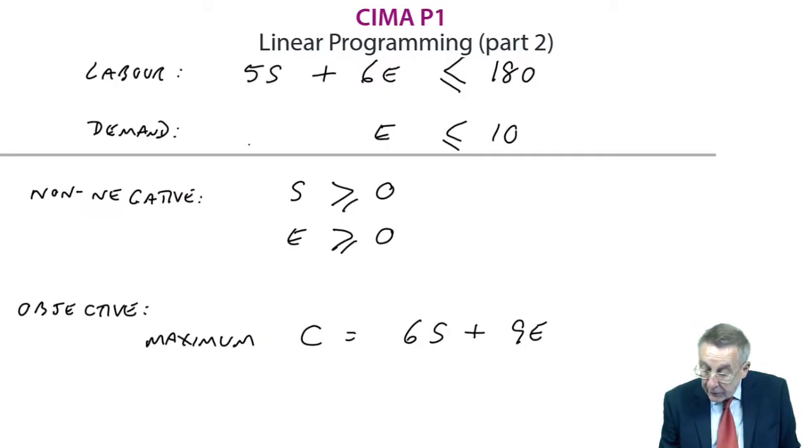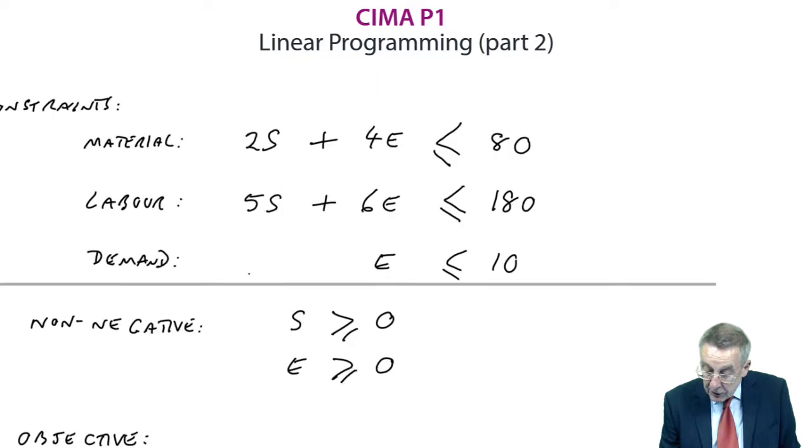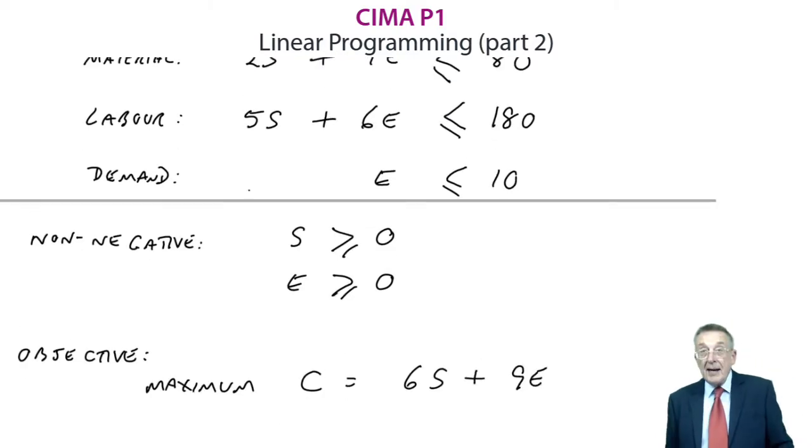In the previous lecture, we formulated all the constraints: materials, labour, demand, and our objective to maximize the contribution. I said the way we're going to solve it to actually determine how many S and E we should make, we're going to use the graphical approach.